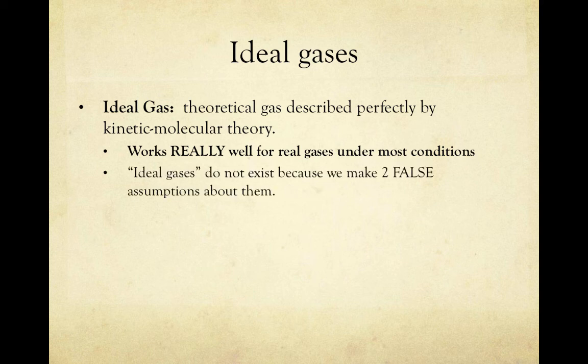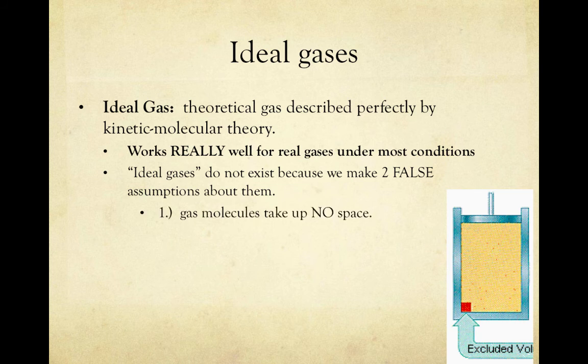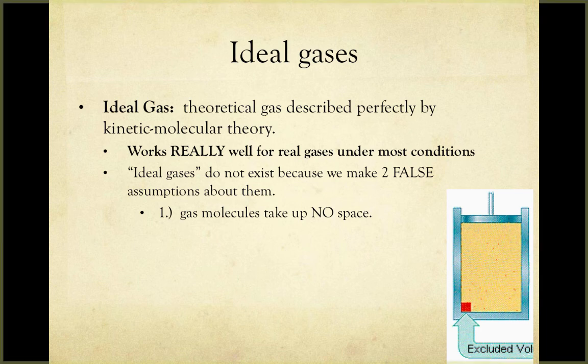The ideal gas itself does not exist because we make two false assumptions when we mathematically model ideal gas behavior. First, we assume that gas molecules take up no space. If you look at the picture here, the tiny little red dots spread throughout the orange area are the molecules themselves. The orange area represents the space between the molecules, and the red square representing the combined volume of the actual particles is relatively small compared to the orange volume of the entire gas. Therefore, we say that the volume of the particles themselves is negligible — they take up no space.